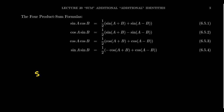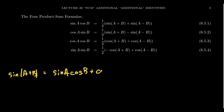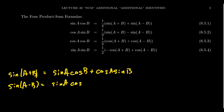Just as a reminder, sine of A plus B equals sine of A cosine of B plus cosine of A times sine of B. And now let's write the angle difference identity: sine of A minus B equals sine of A cosine of B minus cosine of A sine of B.